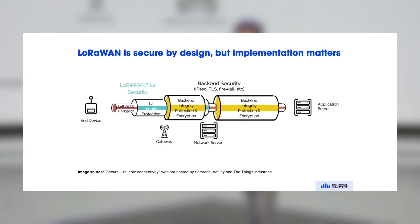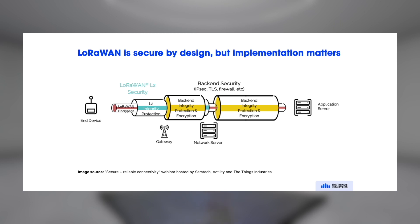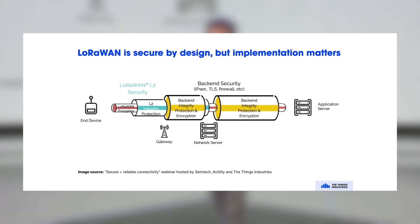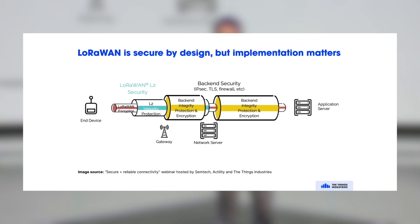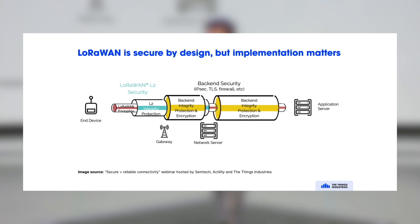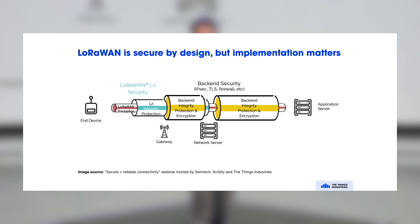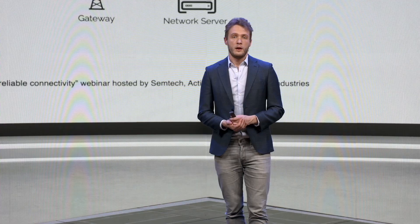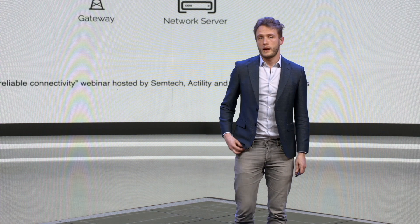LoRaWAN end-to-end security is provided by the application session key — shown in red — which secures the application payload. The security contract between the end device and the network server is enabled by the network session key — shown in light blue. The gateway is just any internet-connected device with an IP address, and you can use any industry standard — TLS certificates, IP security, or VPN — to secure its channel to the network server. The same industry standards, such as TLS and API keys, apply from the network server to the application server.